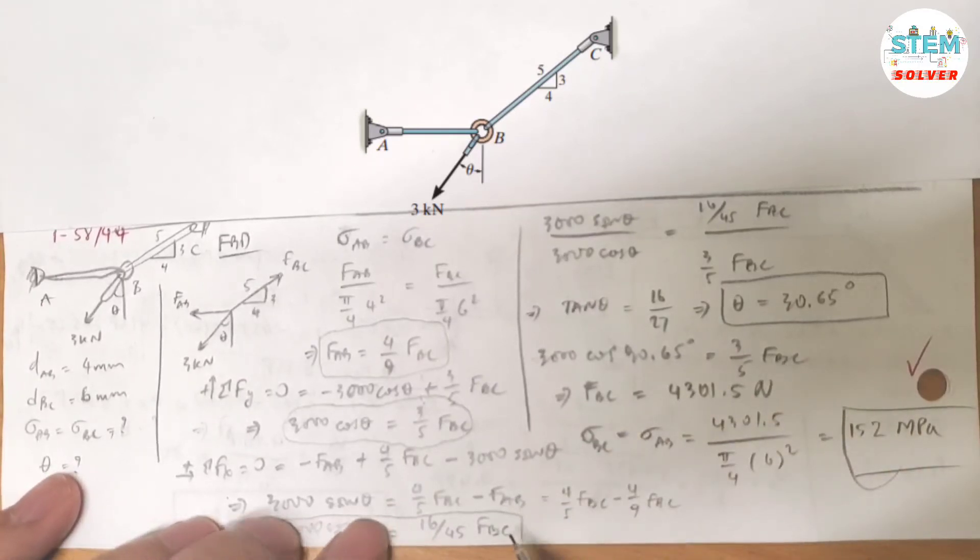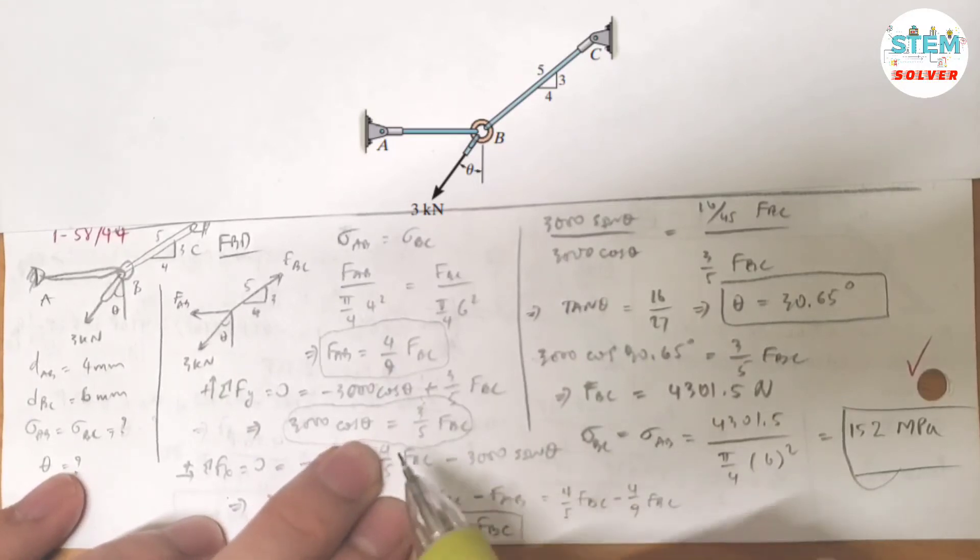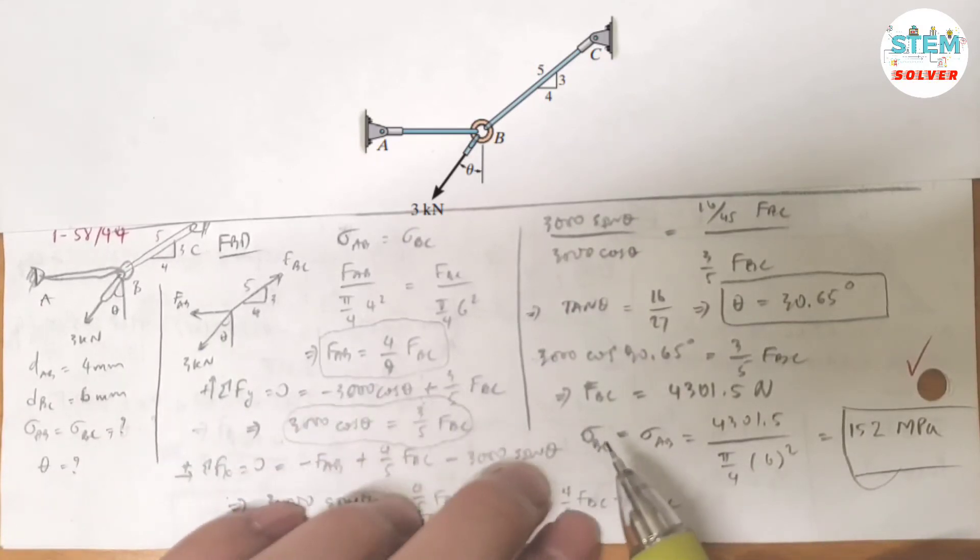So let's see, I can pick this or this. So let's pick this. Because the normal stress in those rods are the same, you can find either FBC or FAB. So for me, I did FBC.